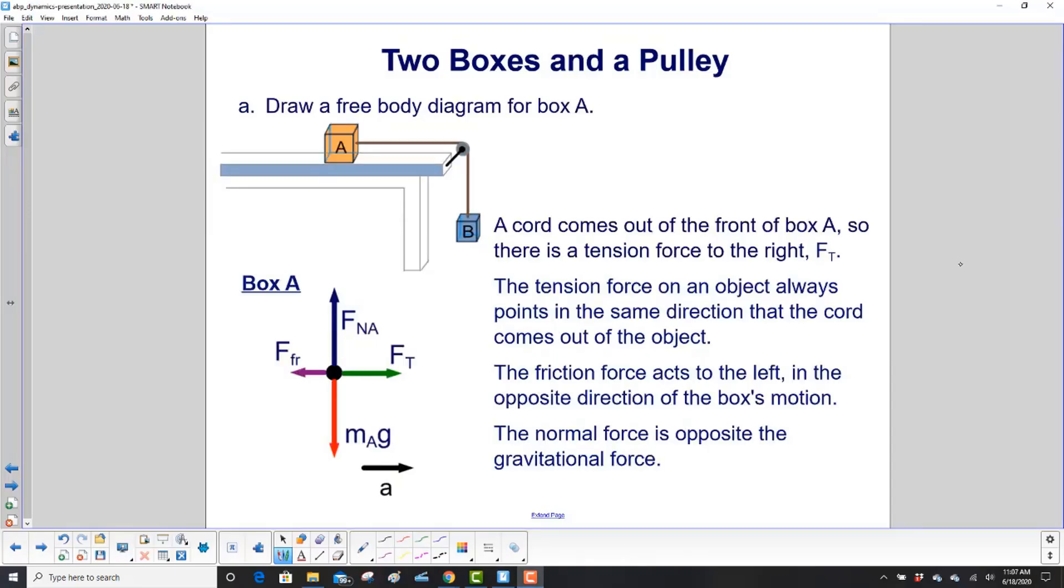Let's work with box A first. We have a cord coming out of box A, out of the front of it. So that's a tension force to the right, which we will call F sub T.